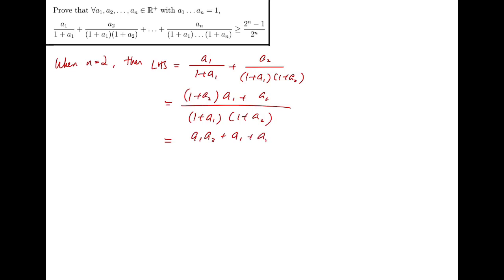In particular, I would start off with small cases of n, say when n equals 2. If n is just 2, then left-hand side would equal to a1 over 1 plus a1 plus a2 over 1 plus a1 times 1 plus a2. Then we simplify this, and we arrive at this expression.